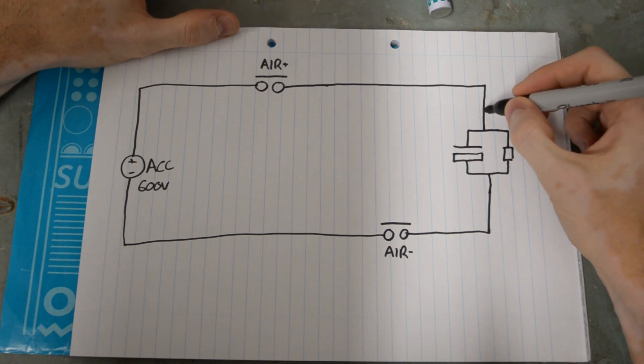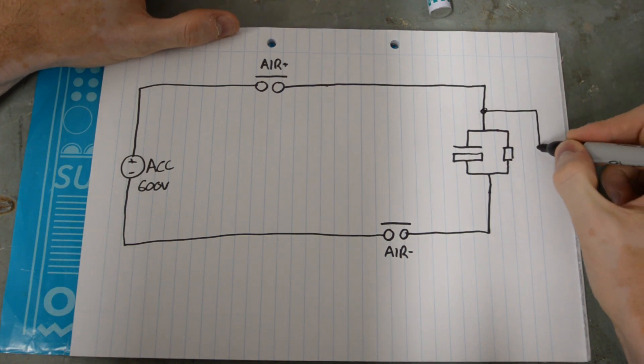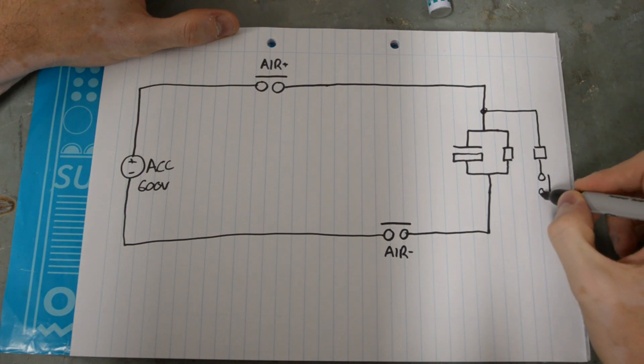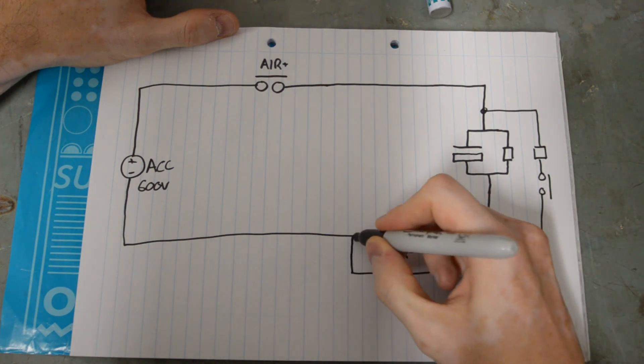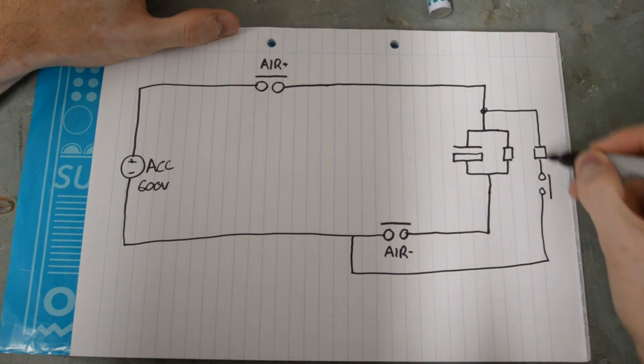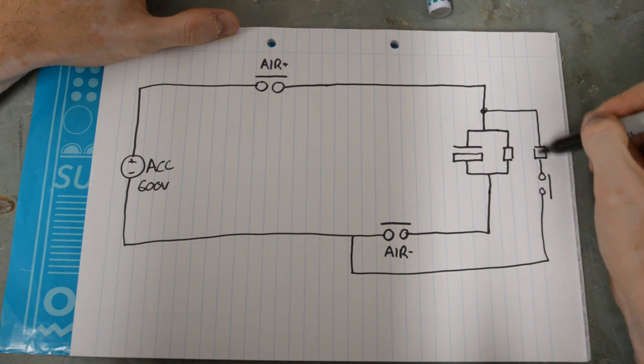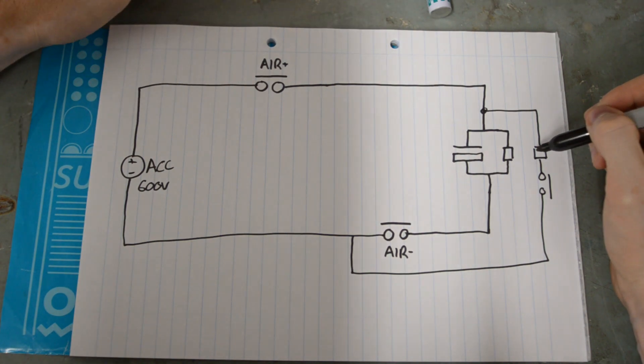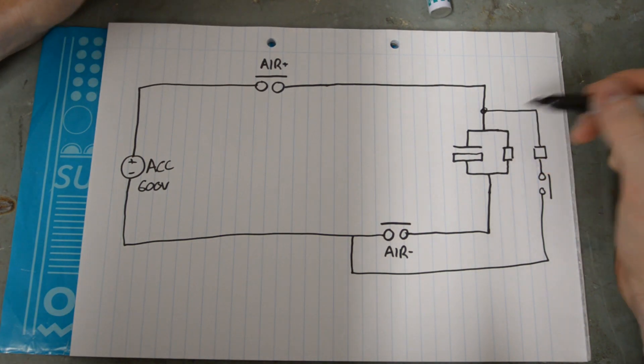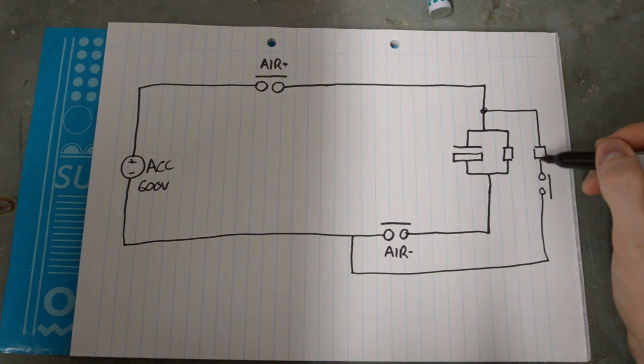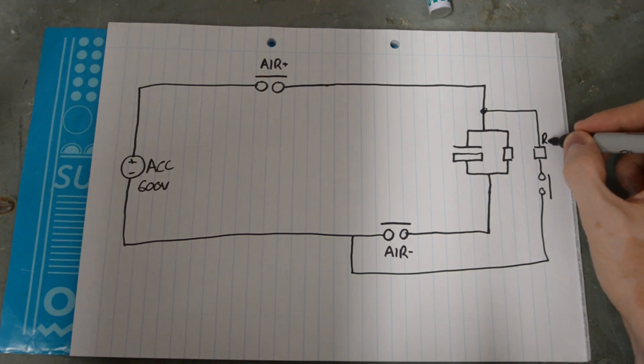We're required to have a discharge circuit which is another resistor and often a contactor. And whenever that contactor is closed, whenever that relay is closed, that makes sure that the capacitor discharges through this resistor as well. And this discharges very quickly the capacitor, so it very quickly makes the tractive system safe. So that's all well and good, that makes a lot of sense, that discharge resistor.